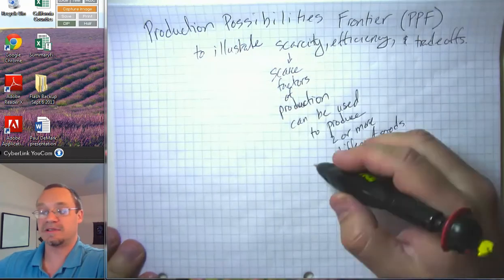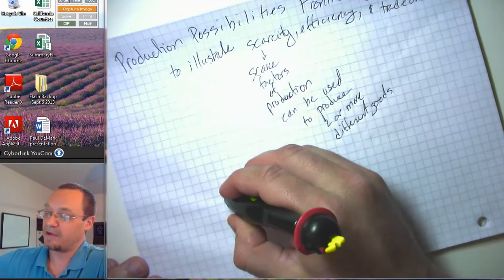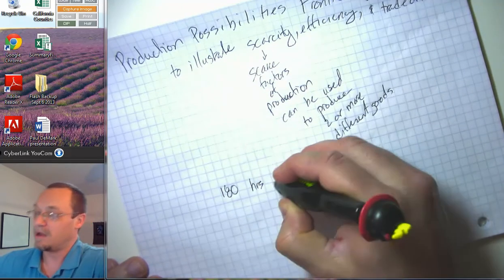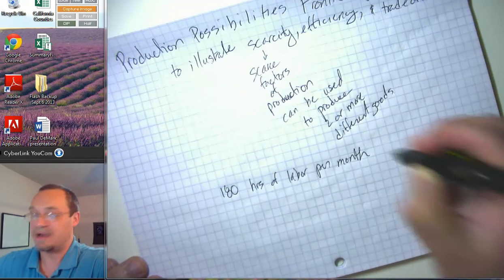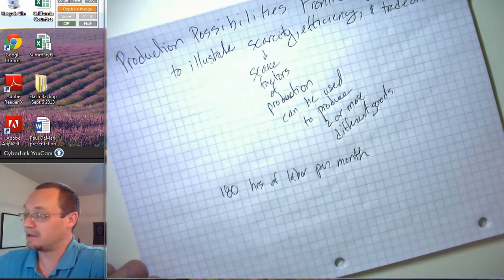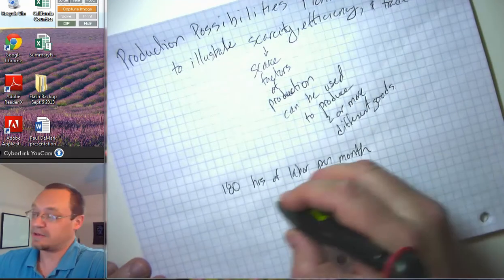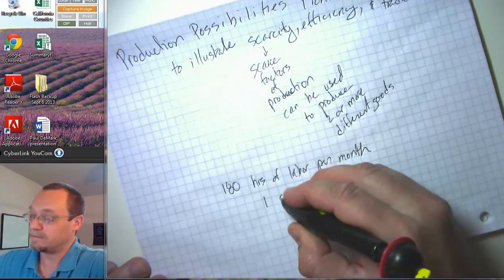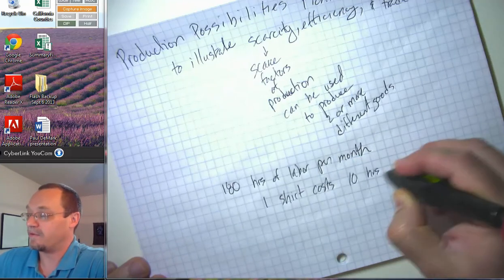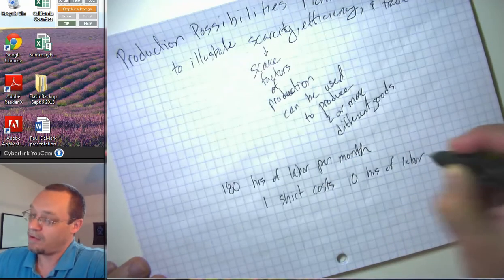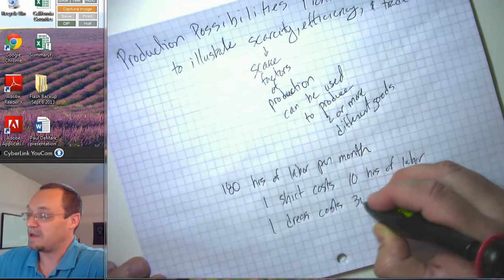For a particular scenario here, let's say that you have 180 hours of labor per month, and you're operating a small tailoring or clothing-making shop. There are two different things you can do with your time: you can produce one shirt, and that costs 10 hours of labor, or you can produce one dress, and that costs 30 hours of labor.